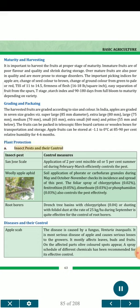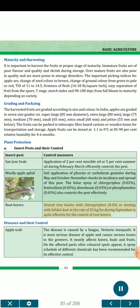Plant Protection — Insect Pests and their Control. San Jose scale: Application of 2% miscible oil or 5% summer oil during February–March efficiently controls the pest. Woolly apple aphid: Soil application of phorate or carbofuran granules during May and October–November checks its incidence. Sprays of chlorpyrifos 0.02%, fenvalerate 0.05%, dimethoate 0.03%, or phosphomidon 0.03% also control the pest effectively. Root borers: Drenching tree basins with chlorpyrifos 0.04% or dusting with folidol dust at 25 kg/ha during September is quite effective.